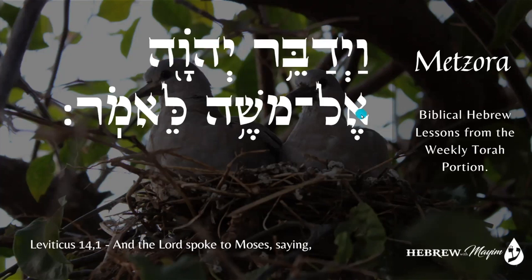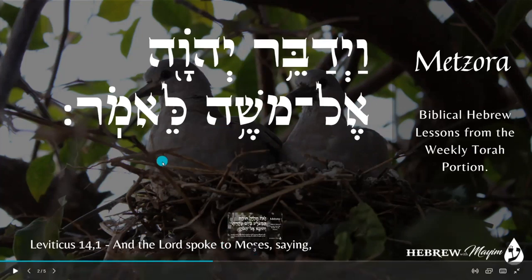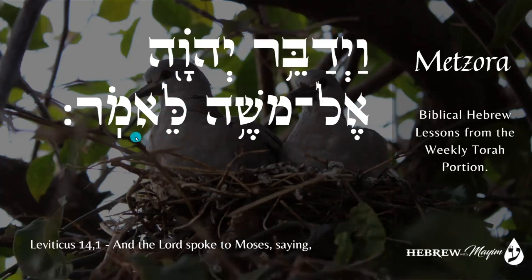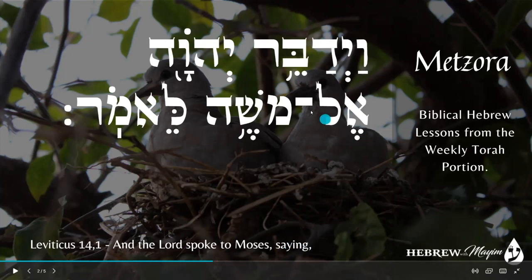Hashem means 'the name,' and it's referring to Yod-Heh-Vav-Heh. Then we have an Aleph with a Segol and the Lamed — this is El, and El means 'to.' Then a Mem with a Cholam which says Mo, and then a Shin with a Segol with a He — it says Sheh, Mosheh. This is Moses. Then we have a Lamed with a Sere which says Le, and the Aleph is part of that syllable. Then a Mem with a Cholam and the Resh together says Mor — Lemor — which is translated as 'saying.' So: Hashem spoke to Moses, saying.